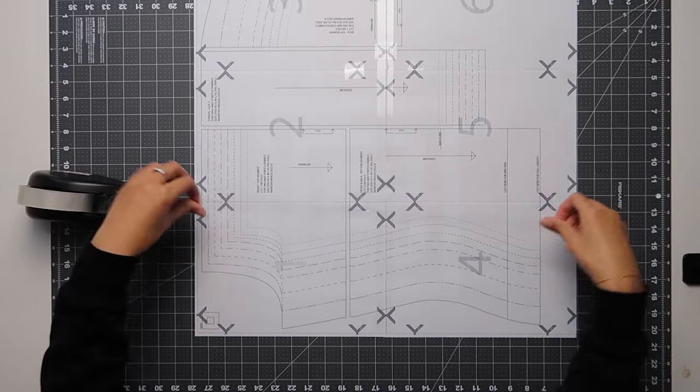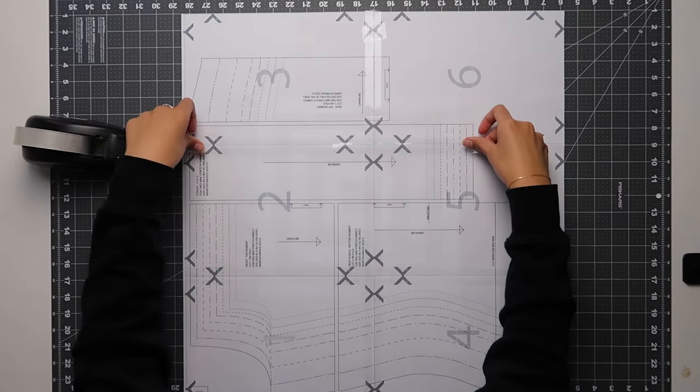then you can go in with the longer lengths of tape adjoining all the pages together. Make sure you do this after you've done the small tabs so that you can course correct if you need to.